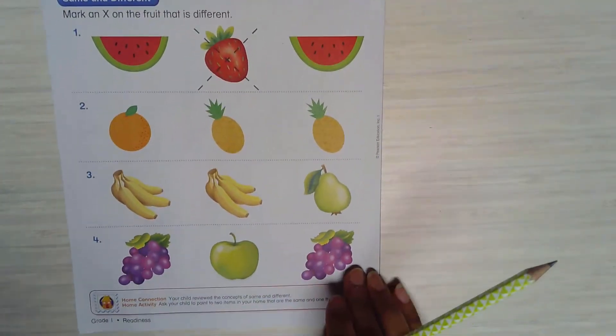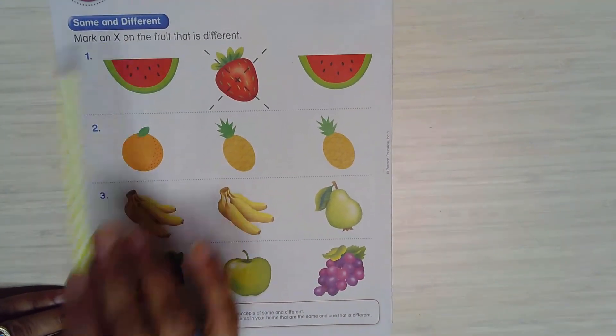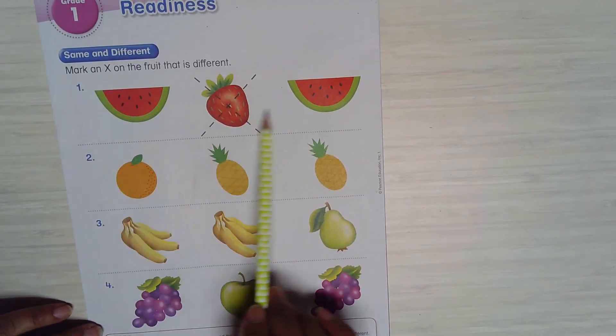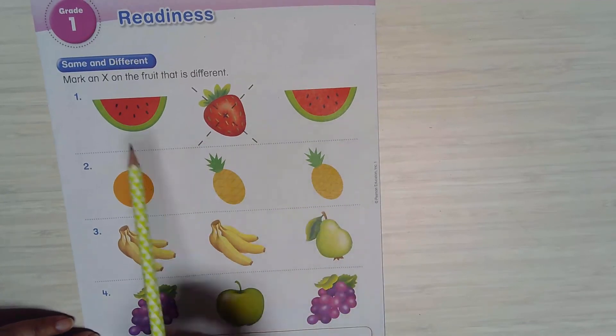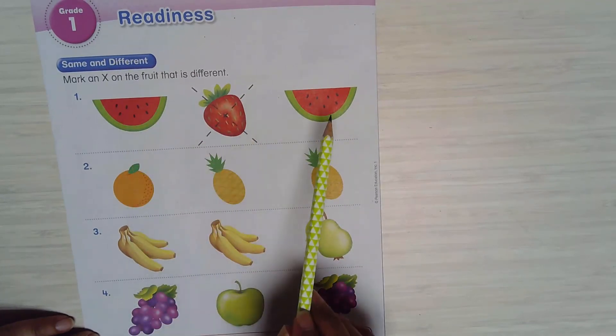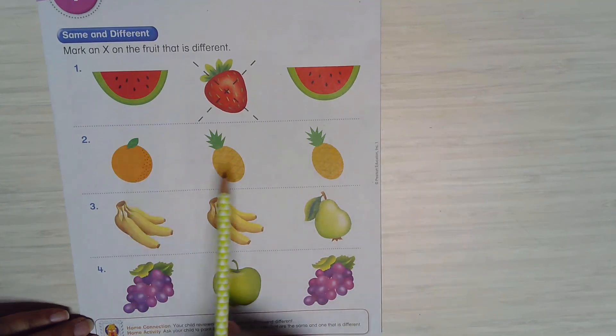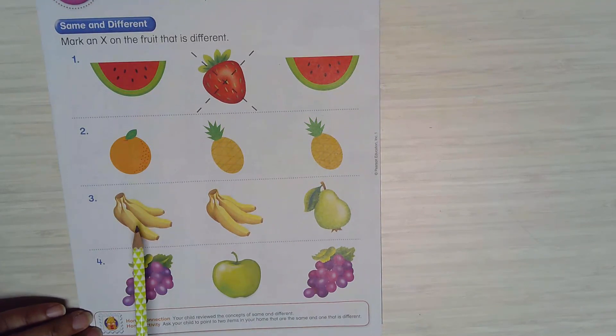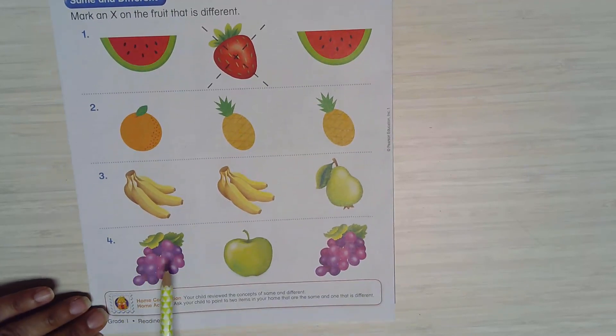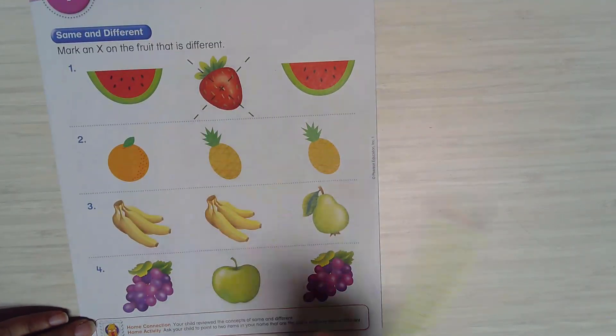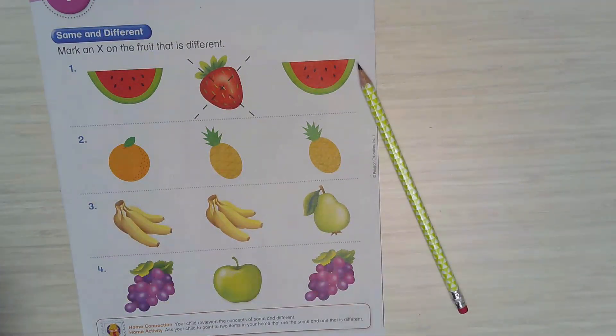Now let's turn the page - same and different. Mark an X on the fruit that is different, and then they show you the first example. So I have watermelon, I have strawberry, and I have watermelon. So this is a different one, so you X this one. This is so easy. You have orange, pineapple, pineapple - which one is different? Got it. Number three, you have banana, banana, and pear - which one is different? I know you get it. And number four, you have grapes, apple, and grapes - which one is different? You're gonna put an X, same like the example you have on the top.